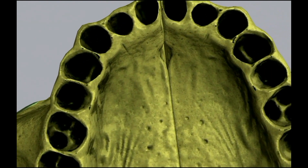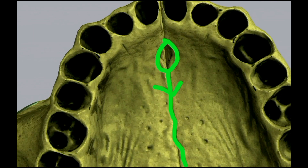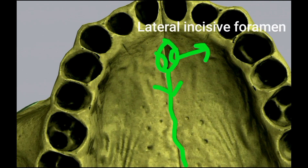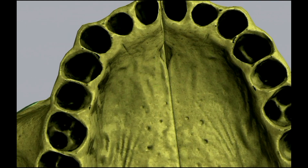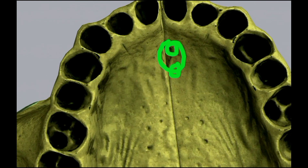Just behind the incisors, the hard palate shows the incisive fossa, a cone-shaped fossa just behind the incisor teeth. This incisive fossa presents incisive foramina in its lateral wall, in line with the intermaxillary suture. On either side are the lateral incisive foramina, transmitting the long nasopalatine vessels from above and continuation of the greater palatine vessels from below. Sometimes it presents anterior and posterior incisive foramina — the anterior passes the long nasopalatine nerve and the posterior passes other related structures.